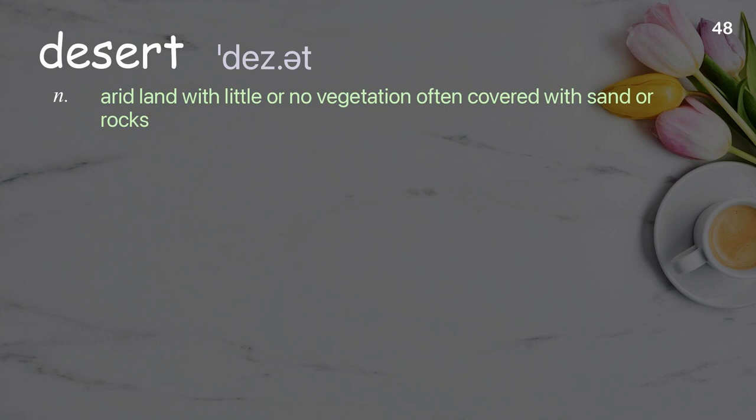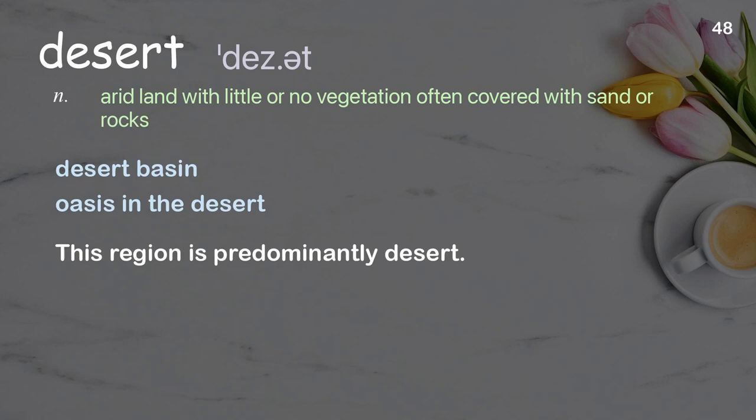Desert: Arid land with little or no vegetation, often covered with sand or rocks. Examples: Desert basin, Oasis in the desert. This region is predominantly desert.